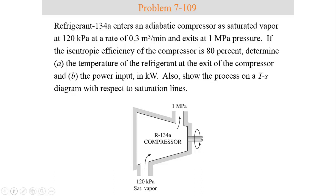The second example problem is a compressor. Refrigerant 134A enters an adiabatic compressor as a saturated vapor at 120 kPa at a rate of 0.3 m³/min and exits at 1 MPa. If the isentropic efficiency of the compressor is 80%, determine (a) the temperature of the refrigerant at the exit, and (b) the power input in kilowatts. Also show the process on a TS diagram with respect to saturation lines. The answers are: exit temperature = 59°C and work in = 1.7 kW.